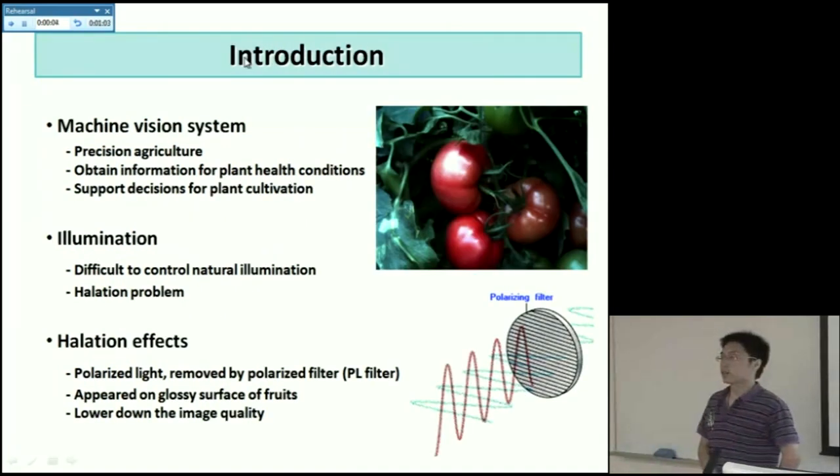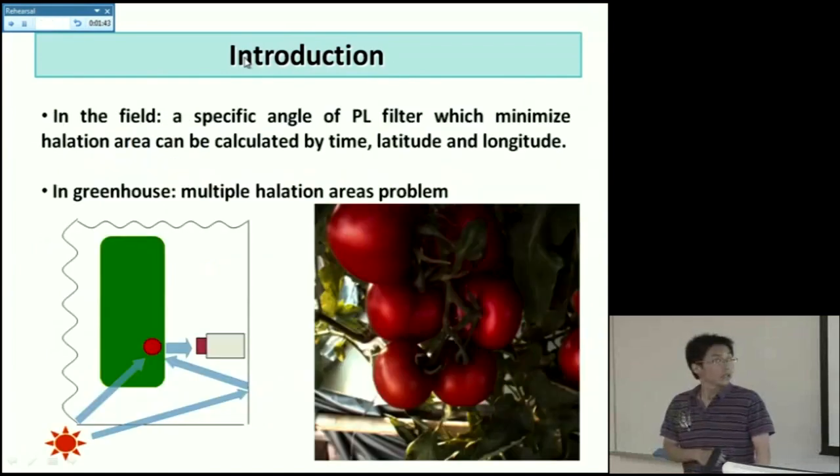This is the introduction part. Nowadays, machine vision system and also image processing are two important techniques for precision agriculture. Farmers want to use machine vision monitoring system to obtain information for plant health conditions and also to support decisions for plant cultivation. For machine vision system, illumination is one of the most important components, but it's difficult to control natural illumination, such as in the field or in greenhouse. It will cause a halation problem.